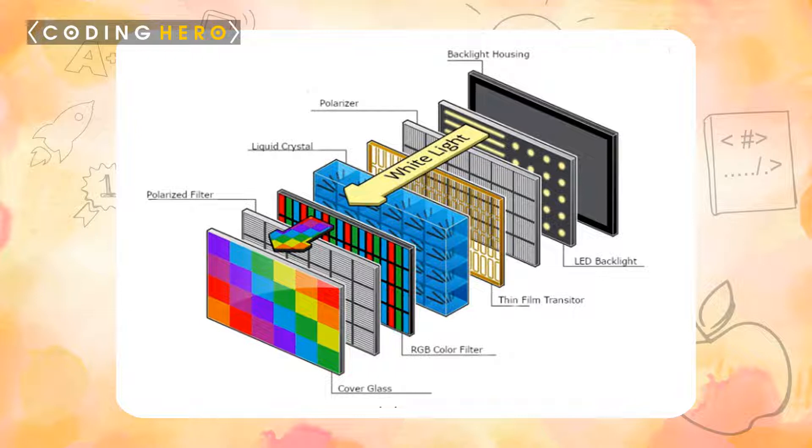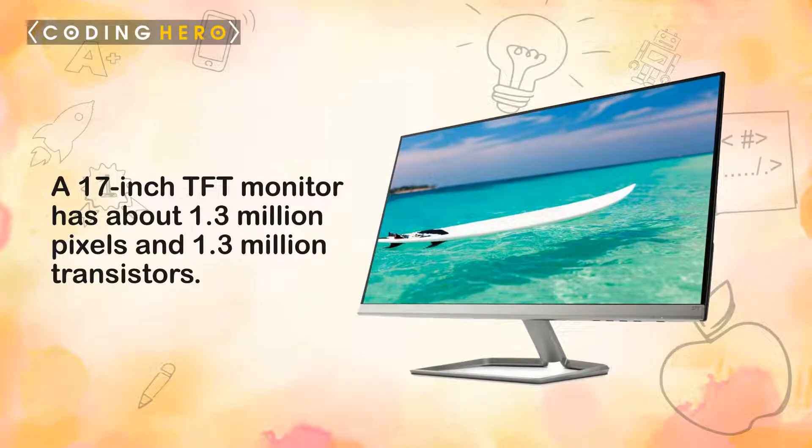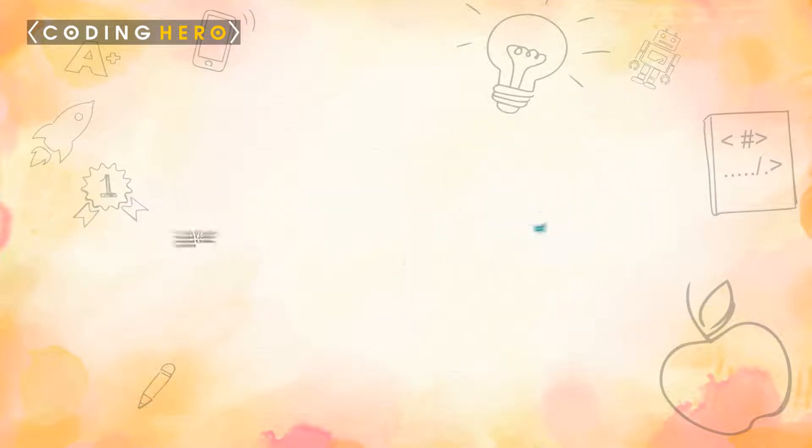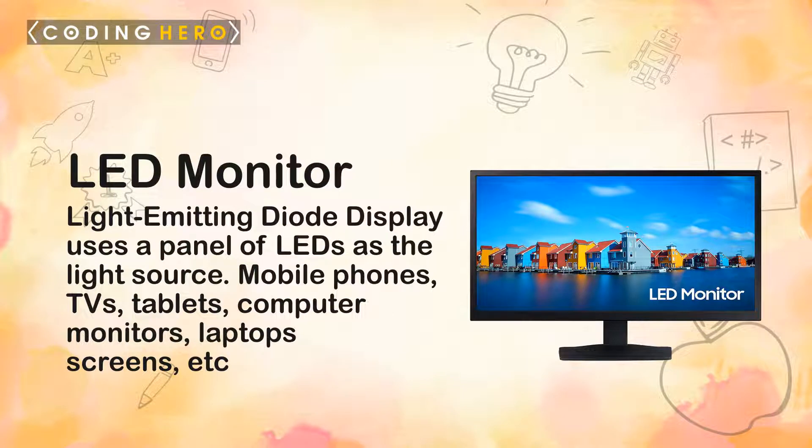A 17-inch TFT monitor has about 1.3 million pixels and 1.3 million transistors. Before TFT, passive matrix LCDs could not keep up with fast-moving images.